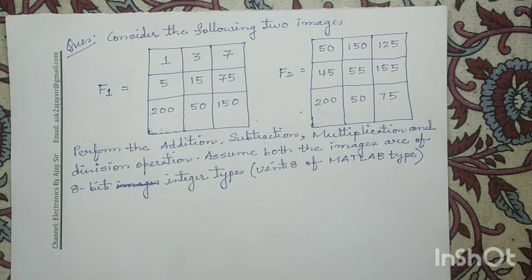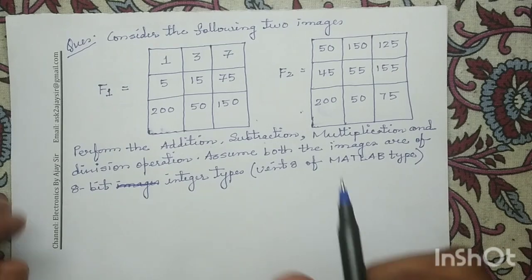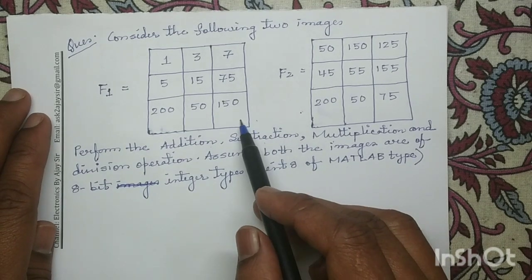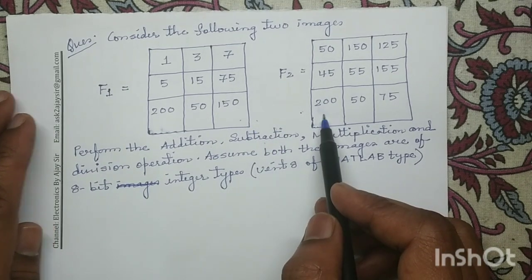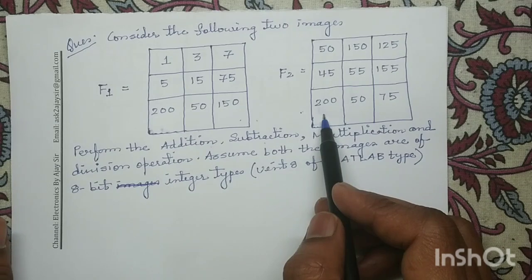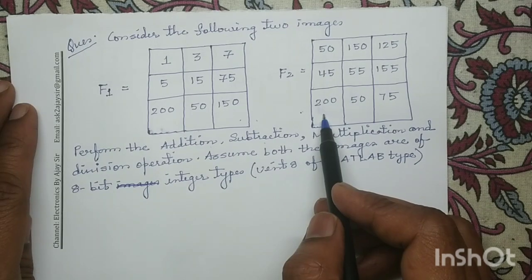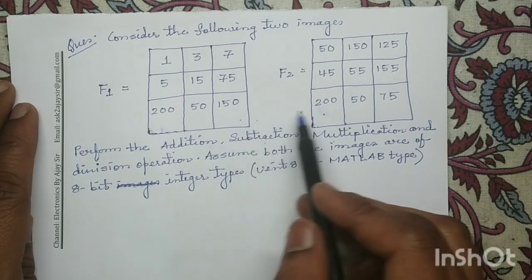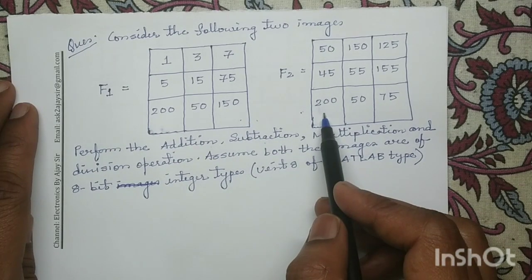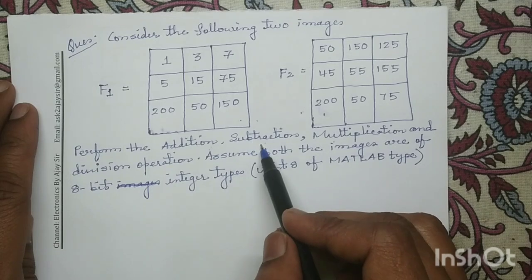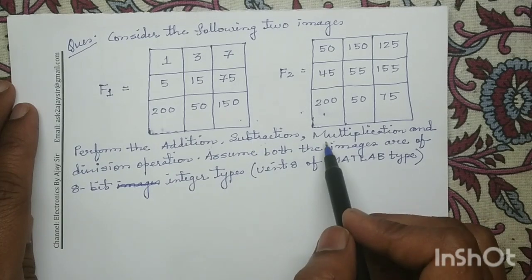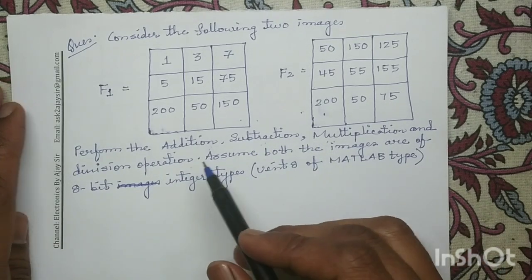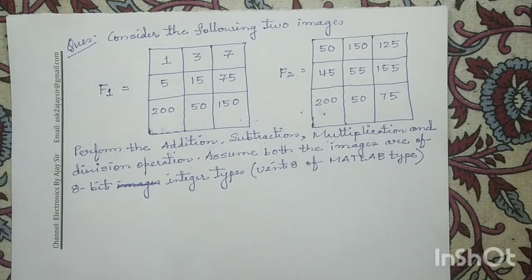Good morning all. Let us solve a numerical question on image arithmetic operations. In this question, two digital images f1 and f2 having the dimension 3×3 are given to us, and on these images f1 and f2 we have to perform the addition operation, subtraction operation, multiplication operation, and division operation. So let us solve this question one by one.